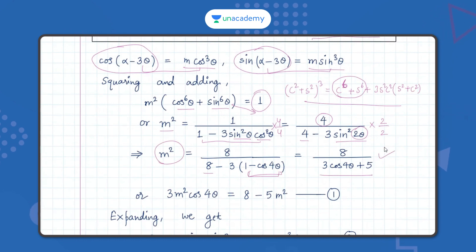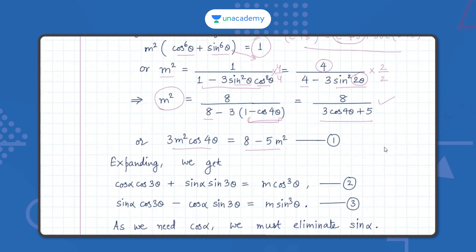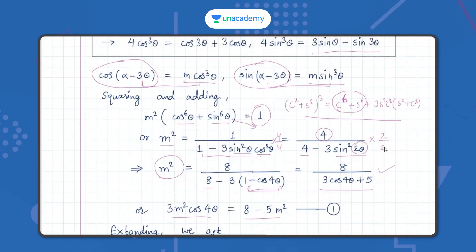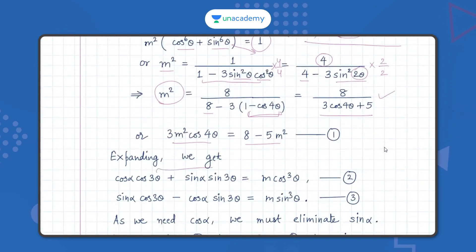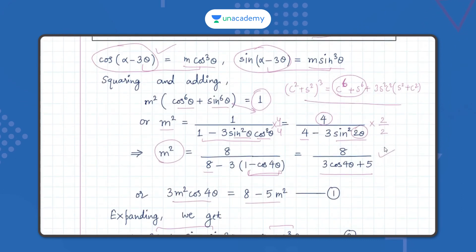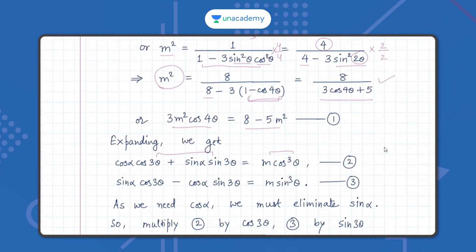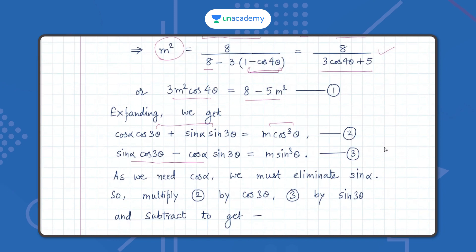On rearranging, since m² equals this expression, we cross-multiply to get equation 1: 3m²·cos4θ = 8 - 5m². Now expanding cos(α - 3θ) using the cos(A-B) formula gives equation 2: cosα·cos3θ + sinα·sin3θ = m·cos³θ. Expanding sin(α - 3θ) gives equation 3: sinα·cos3θ - sin3θ·cosα = m·sin³θ.